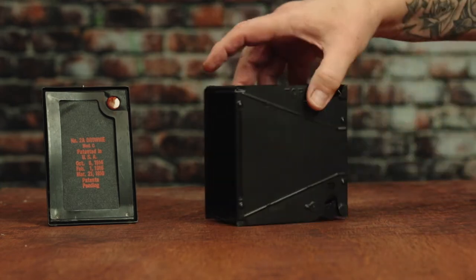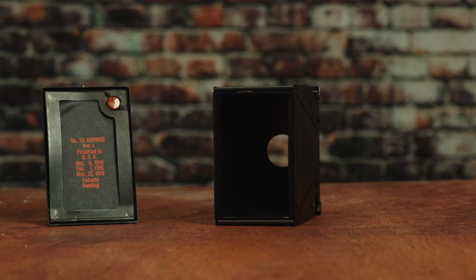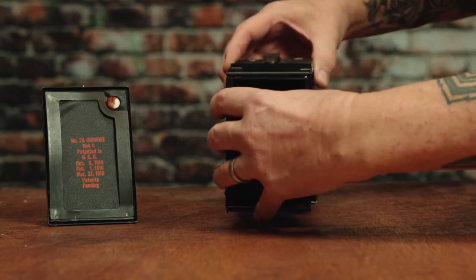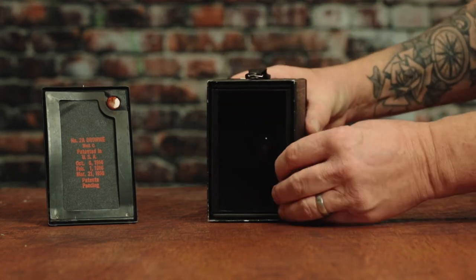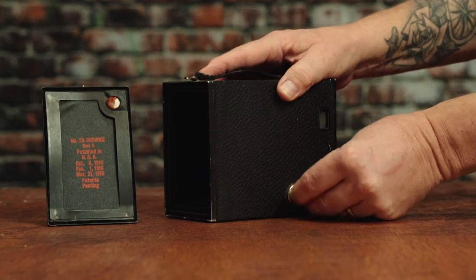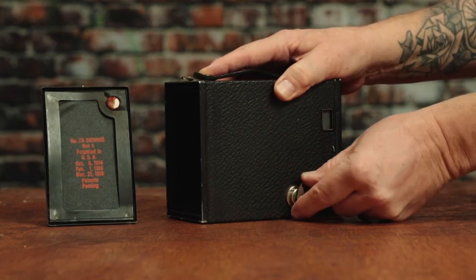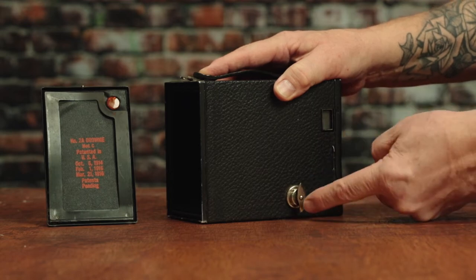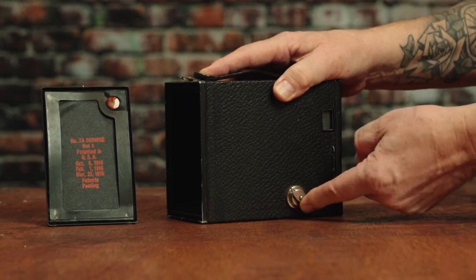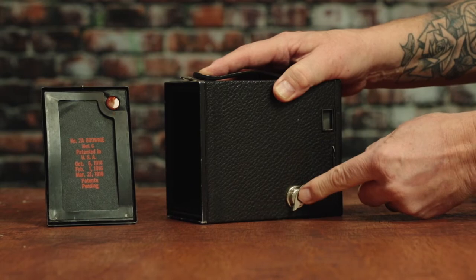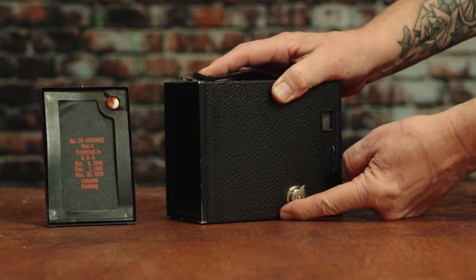So once you've loaded film in this, you're just going to place it back into the camera like this. You're going to rotate this little knob, which is the film winder knob, until it lines up with the spline inside, and then you'll be able to push it in completely like this so that you can wind the film.